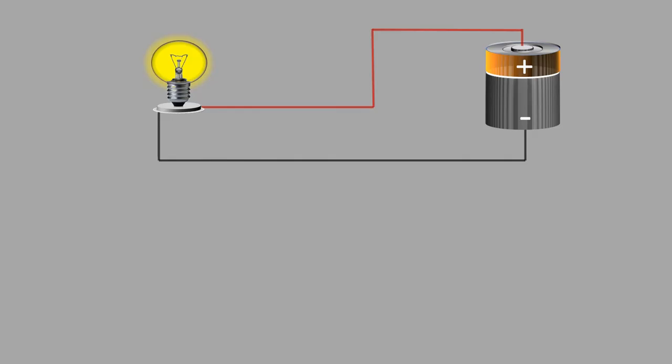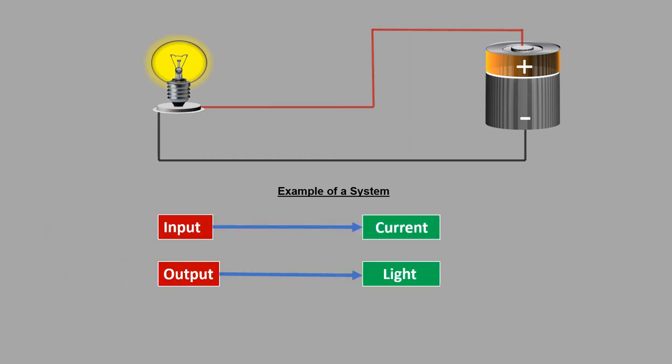Let's consider that a power source is connected to a bulb. Then the bulb glows. This can be considered as a system. Here the input to the bulb is current while the output is light. The lamp filament converts current to light, which is the process.